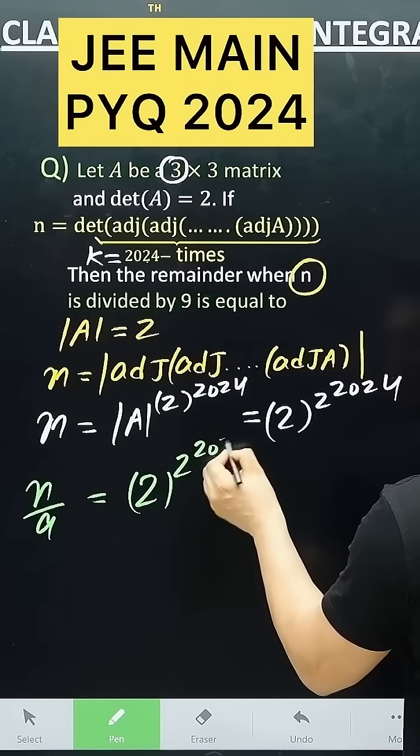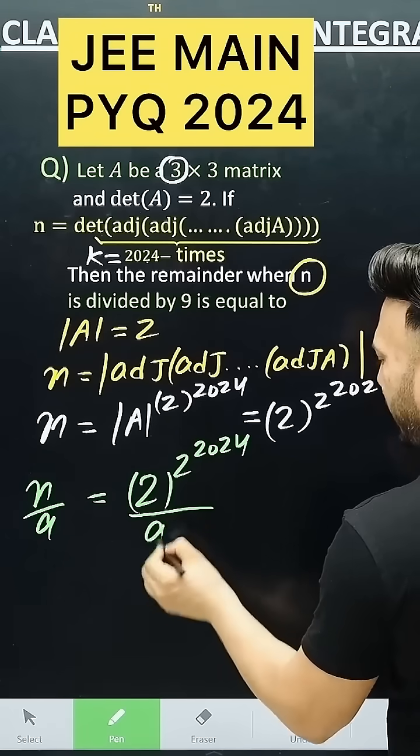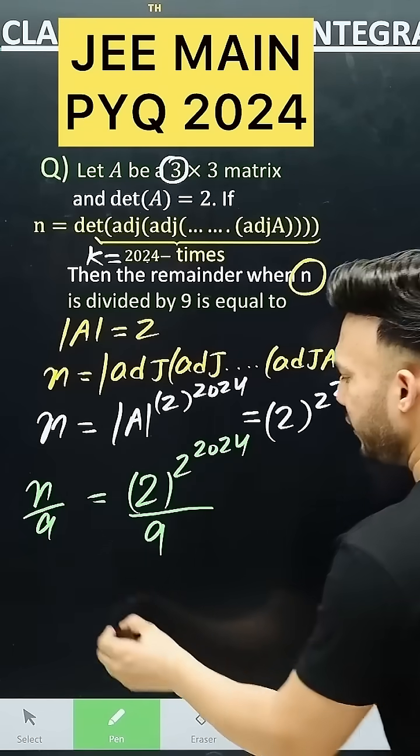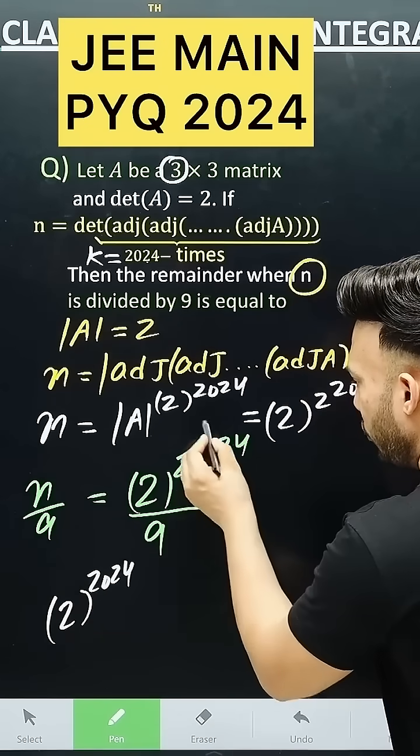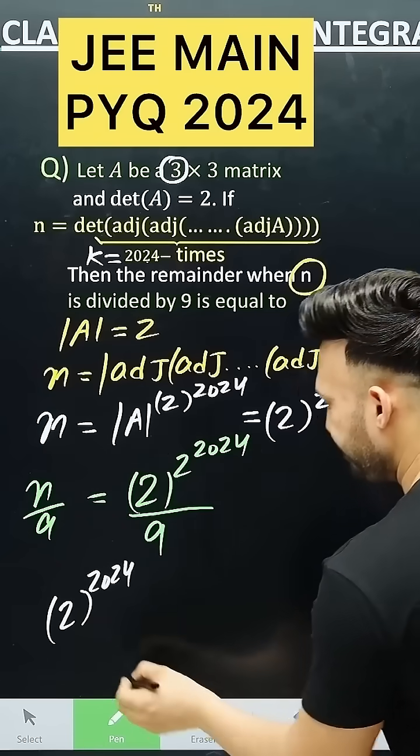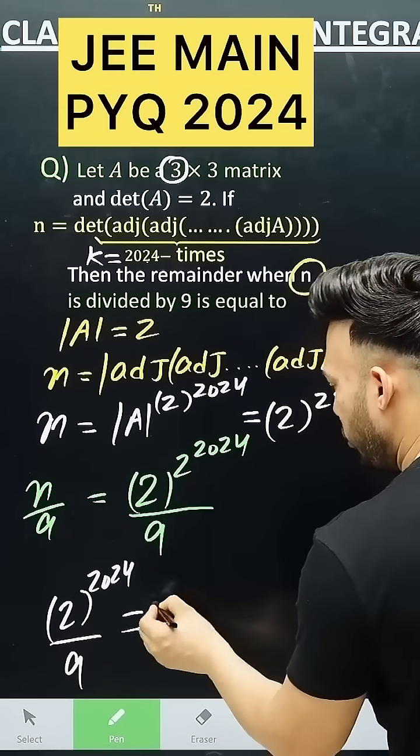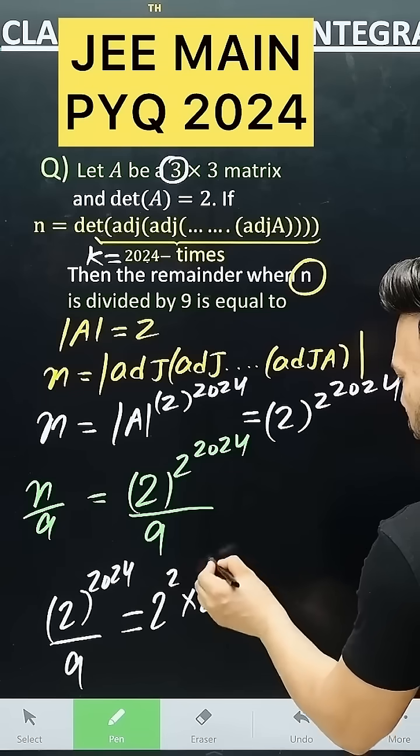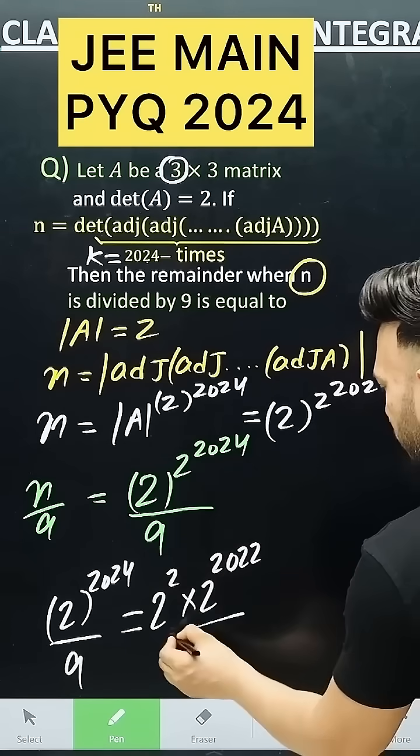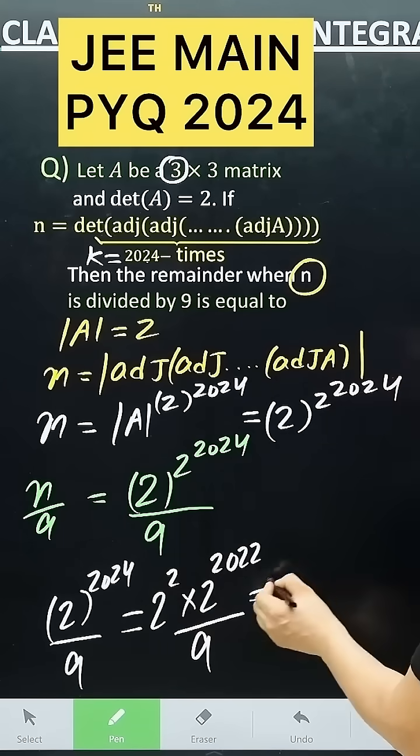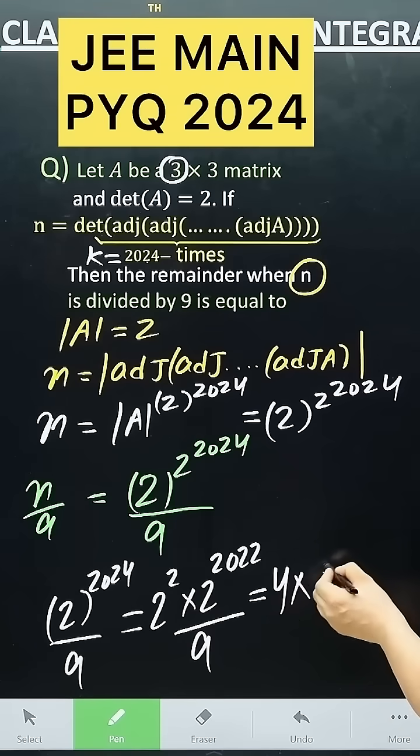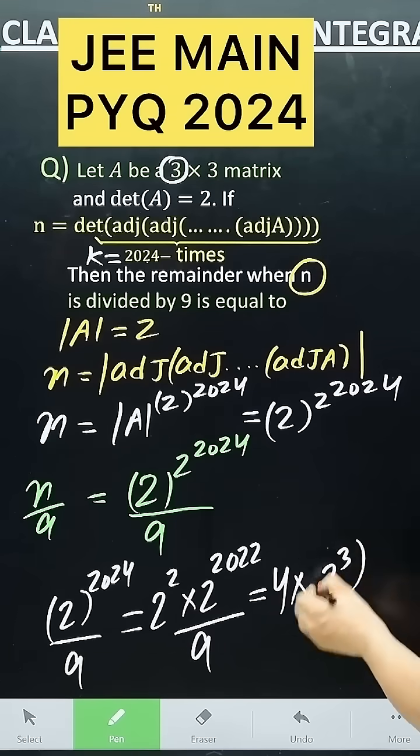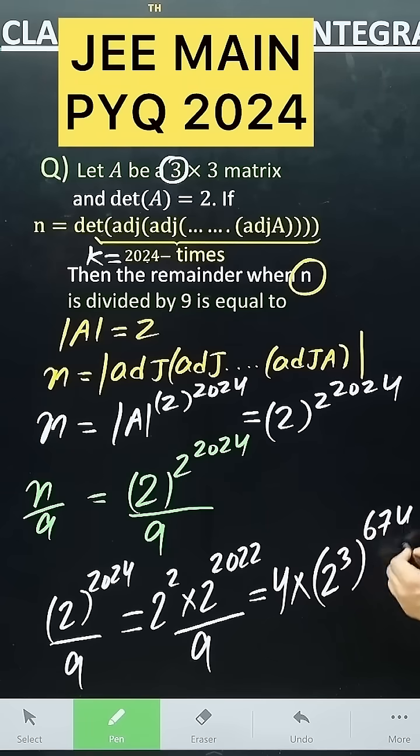To solve 2 to the power 2024 by 9, first divide the power by 9. 2 to the power 2024, write this as 2 to the power 2 times 2 to the power 2022 by 9. Write this as 2 to the power of 2, 4. This will make 2 times 2 times 674 ninths.